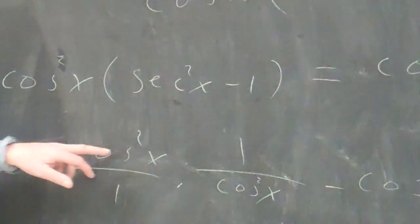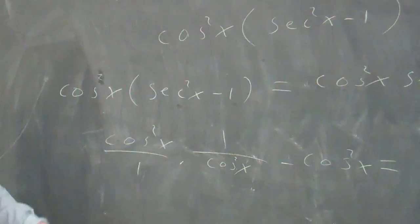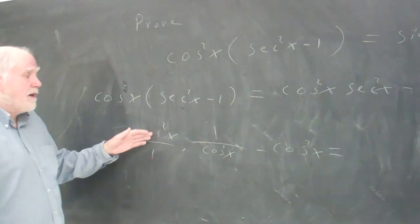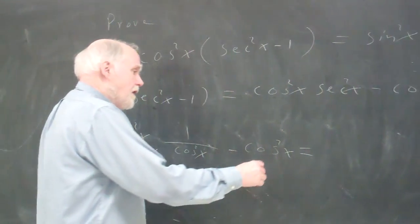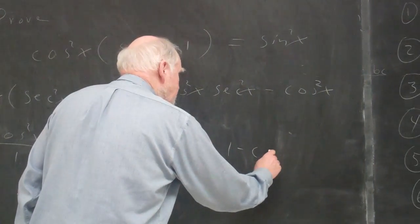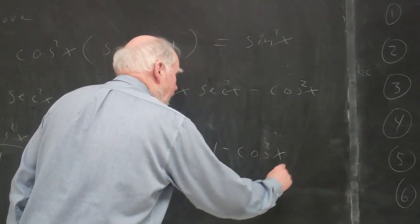Well, if I multiply cosine squared x times 1 over cosine squared x, that's going to give me 1, right? Cosine squared over cosine squared. So I end up with 1 minus cosine squared x.